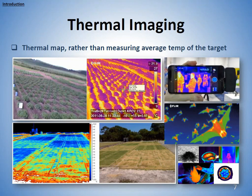Another way to do thermal sensing is thermal imaging. In thermal imaging, instead of a single value for temperature, we can have a thermal map and have a number of temperature values over an area.